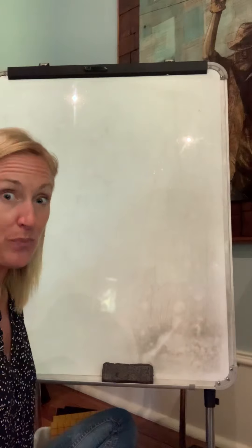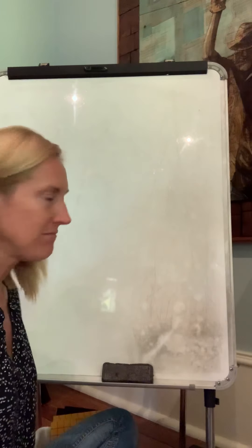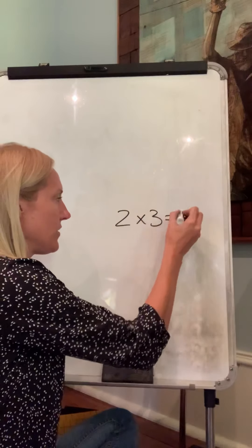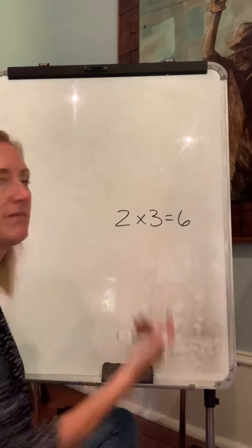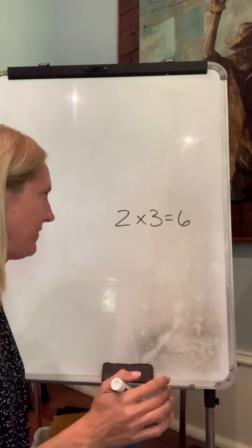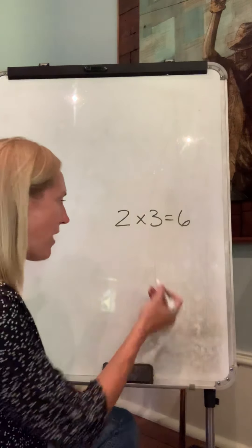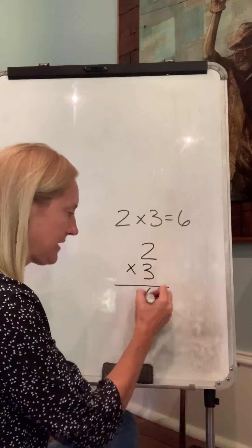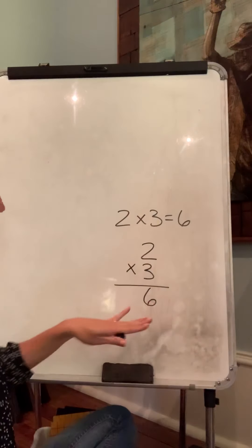You've been working on multiplication facts, memorizing things like two times three equals six, or two threes equals six. You've done this in rocket math where it's written vertically - it's just another way to write it.